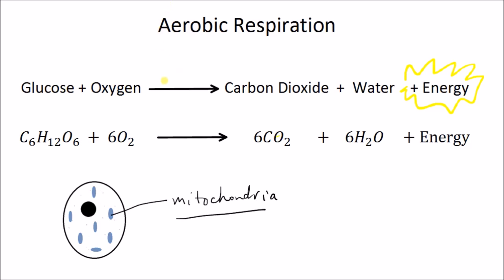And we can represent this reaction using the chemical symbols. So C6H12O6 is glucose reacting with O2 oxygen gives us carbon dioxide CO2 and water H2O and energy. Now energy is not a chemical but we're adding it onto the end of this equation to show that it's being produced.